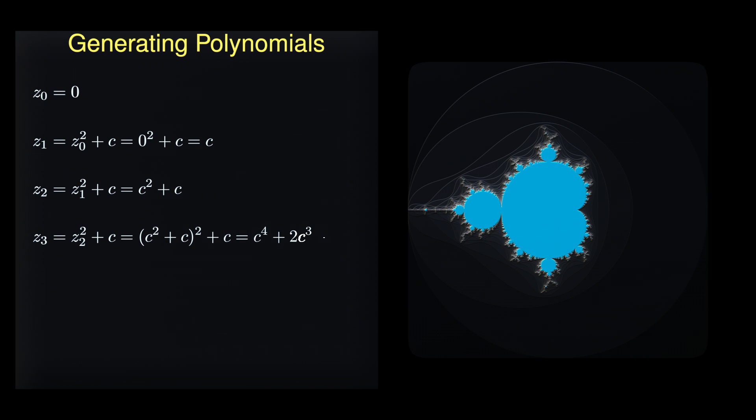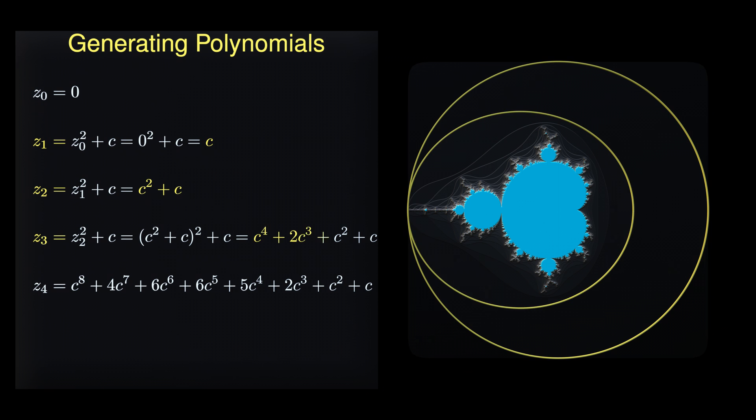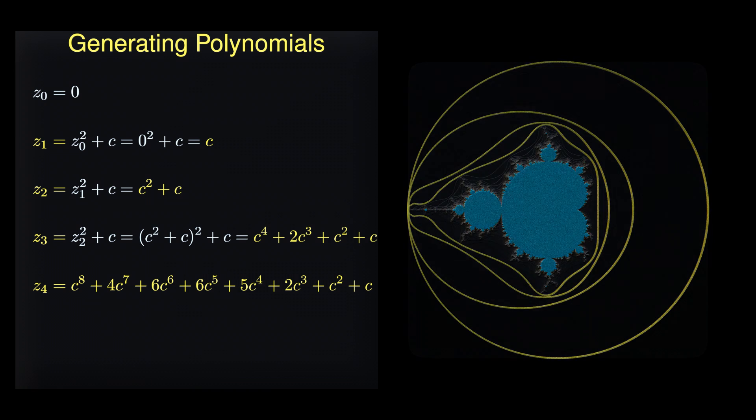This already answers the first question. If you inspect the right-hand side of these equations, you will find the polynomials used to define the curves in the introduction. The corresponding contour lines are the sets of all points where the absolute value of the polynomials is equal to 2. Therefore, these polynomials hold the key to understanding the structure outside of the Mandelbrot set.